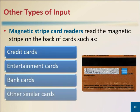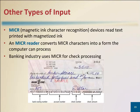The magnetic stripes on the back of cards contain information identifying the card user and other related information. Magnetic ink character recognition devices read text printed with magnetized ink. The banking industry almost exclusively uses MICR for check processing.